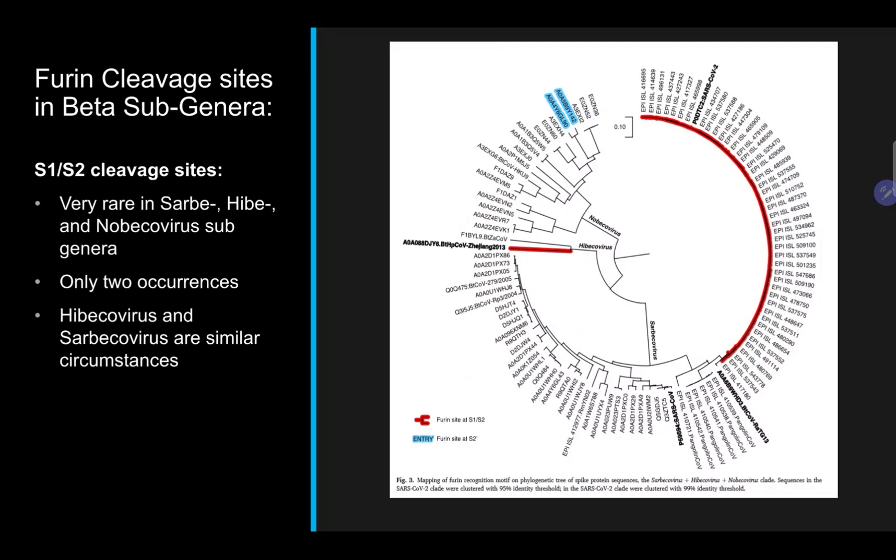The S1/S2 furin cleavage sites are extremely rare in the Sarbe, Hebe, and Nobe groups. In the Sarbe group, COVID is the only virus to have the S1/S2 furin cleavage site.